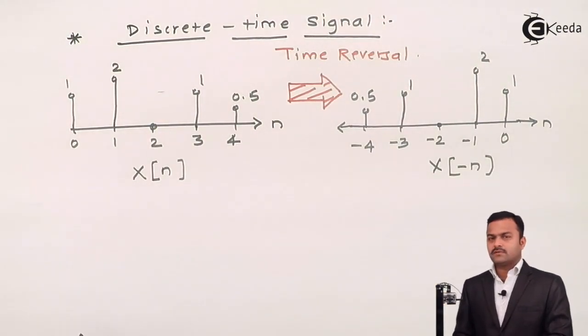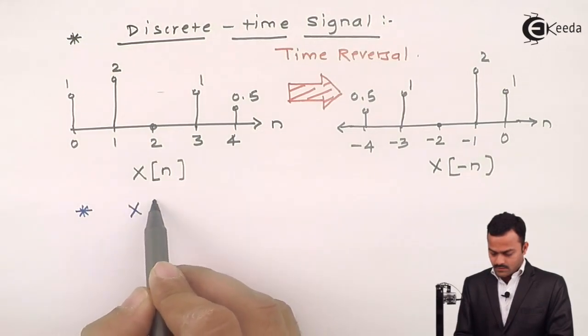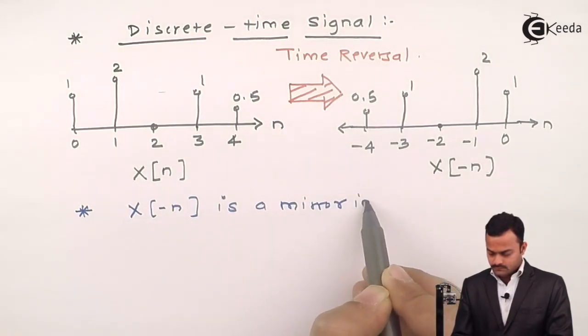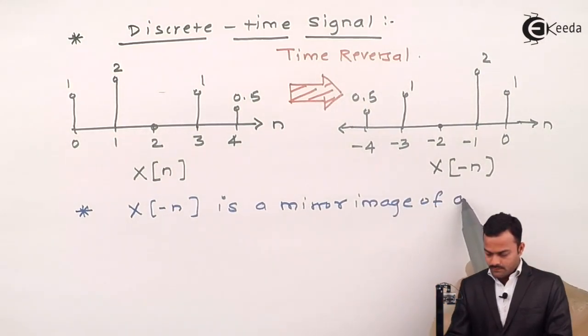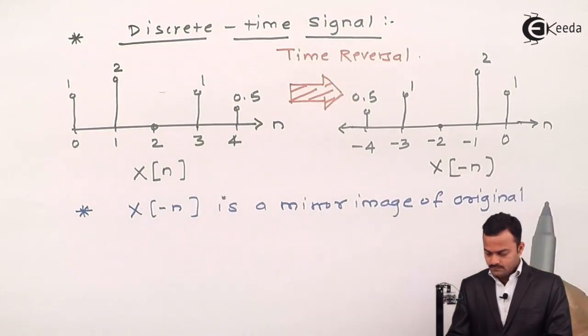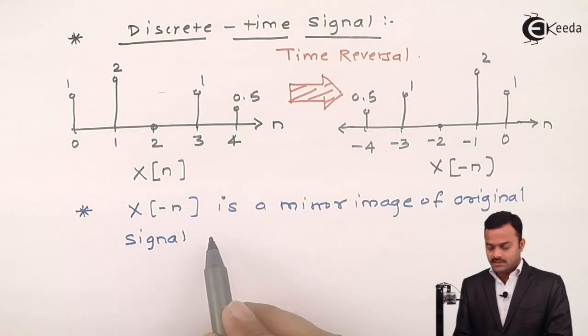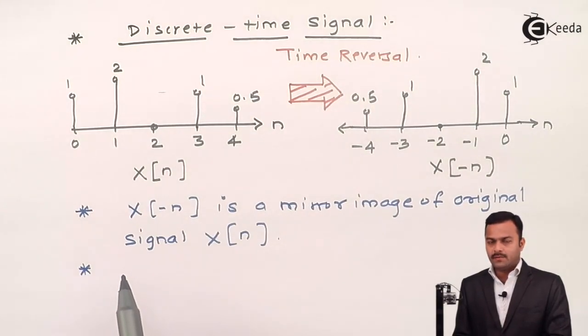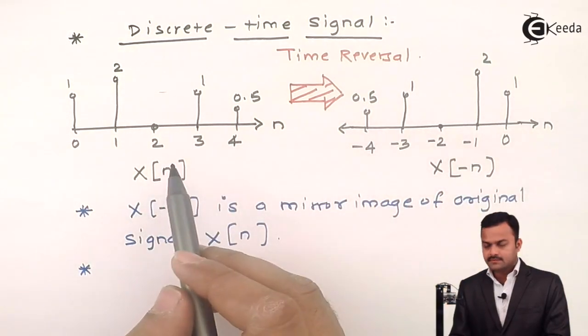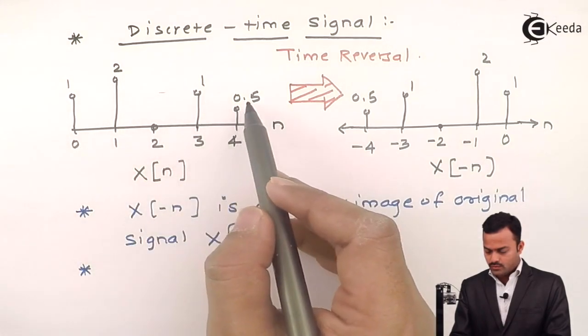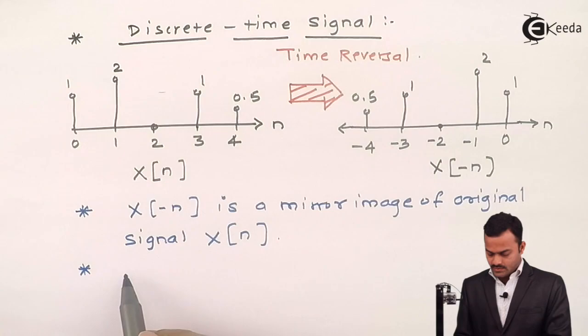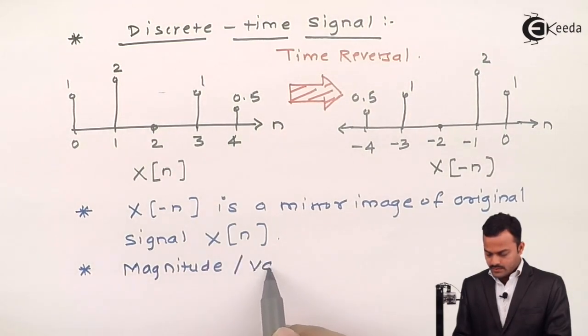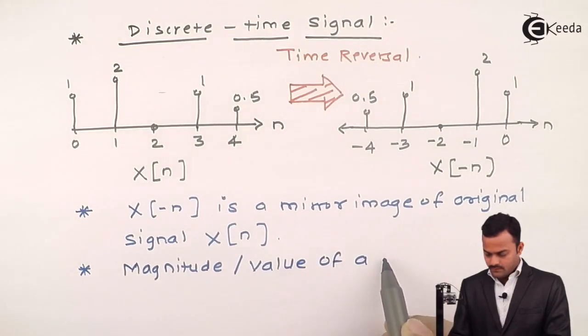Once again, what are the conclusions we can draw from this? X of minus n is a mirror image of original signal, which is X of n. And most importantly, being a change in the independent variable that is n, all the dependent variables will remain intact. So here all the values will be same, meaning 1 to 0.5. Over here also 1 to 0.5. So I can say magnitude or value of a signal X of n and X of minus n is same.